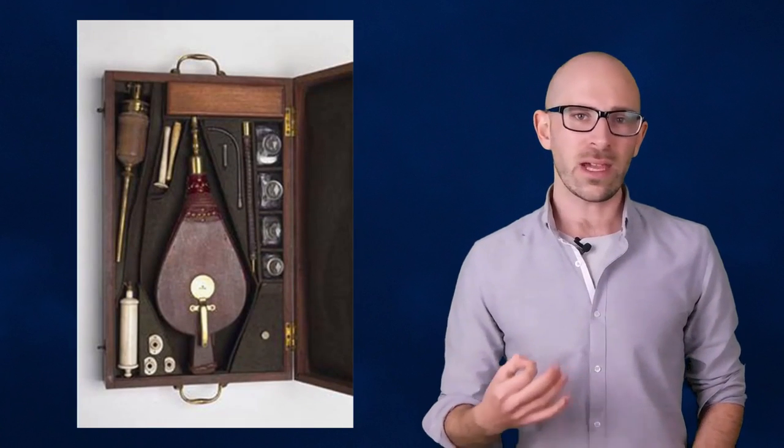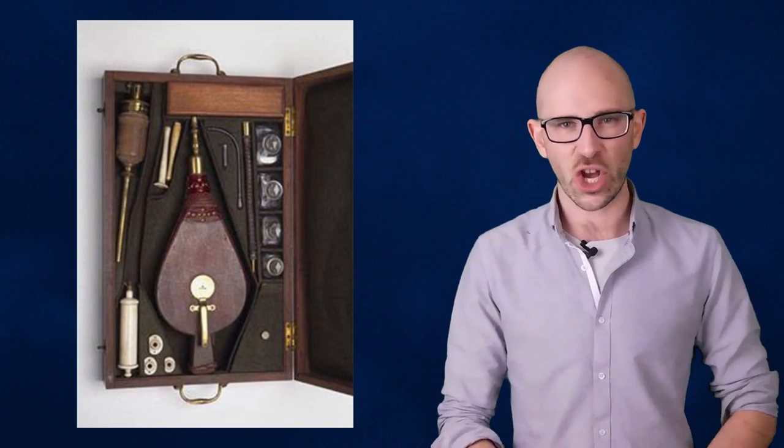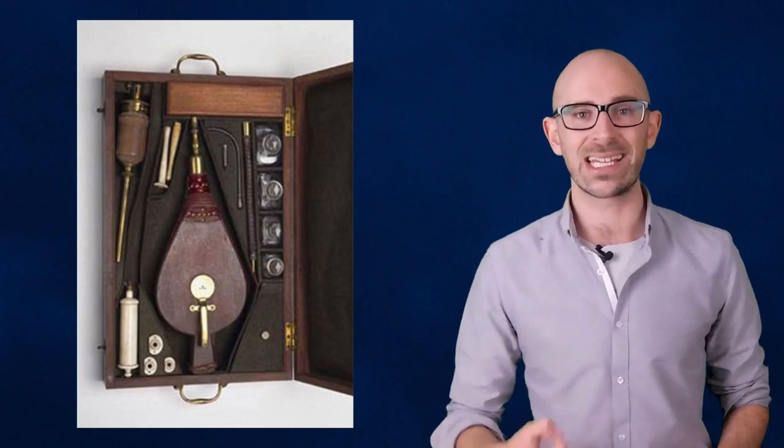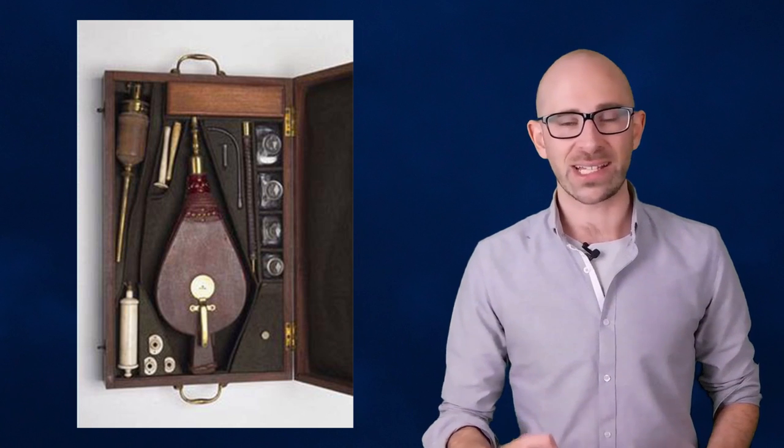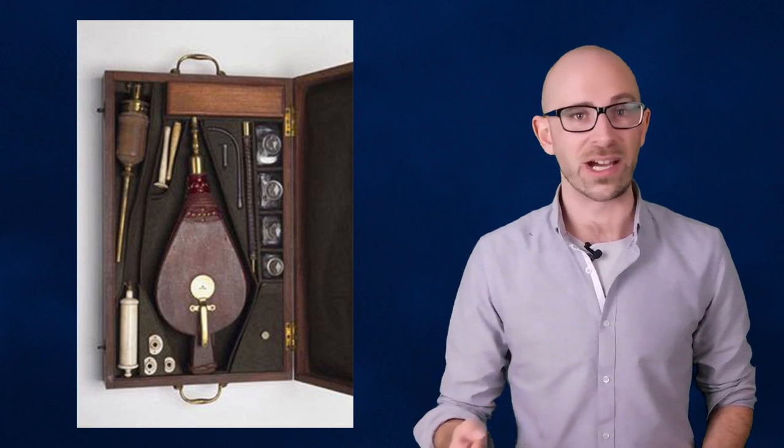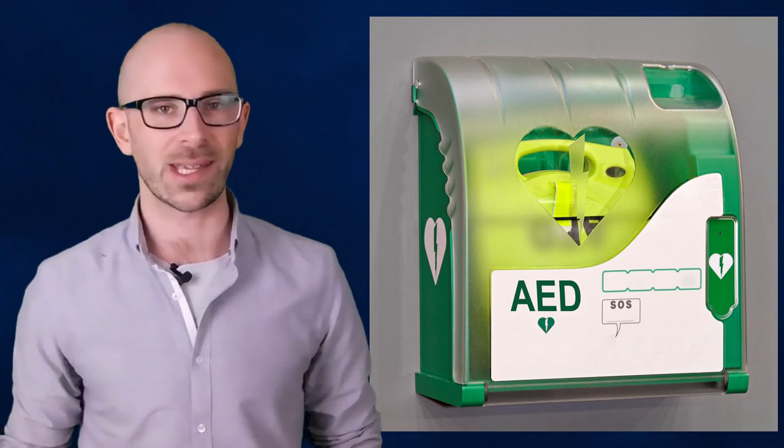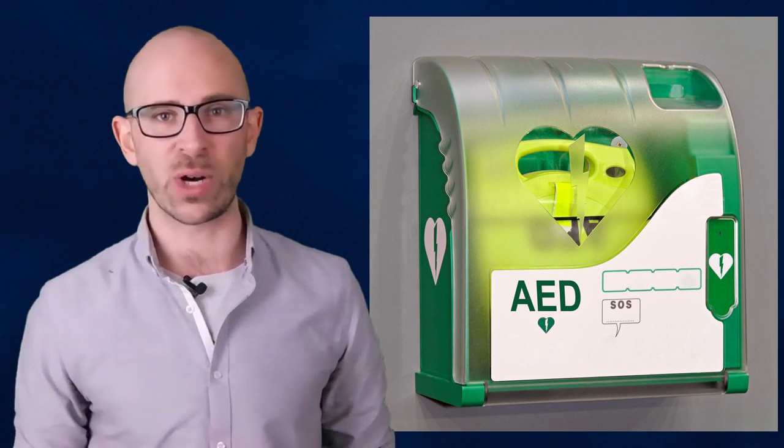In fact, it was such a commonly used resuscitation method for drowning victims particularly that the equipment used in this procedure was hung alongside certain major waterways, such as along the River Thames, equipment courtesy of the Royal Humane Society. People frequenting waterways were expected to know the location of this equipment similar to modern times concerning the location of defibrillators.